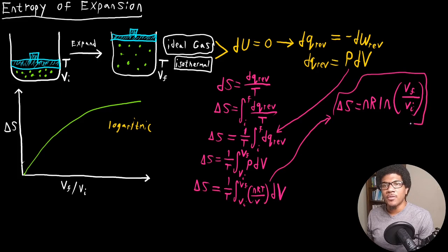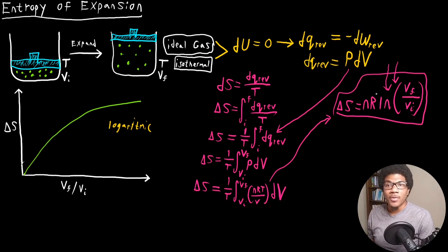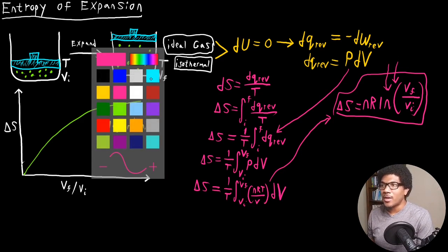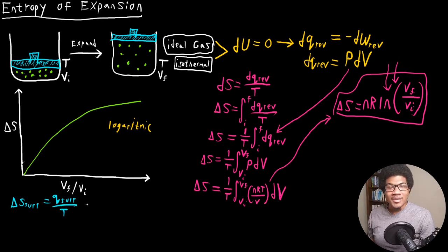This gives you the entropy change for your system. You can see that we do get a logarithmic dependence of the entropy on this ratio of the final and initial volume, which explains why we see that logarithmic increase in our graph. So that gives us the entropy for our system. Now, what about the entropy for our surroundings? For our surroundings, ΔS_surroundings is going to be equal to the heat transfer into the surroundings over T.